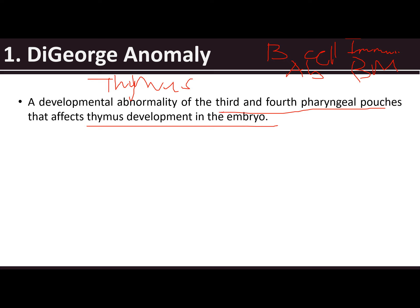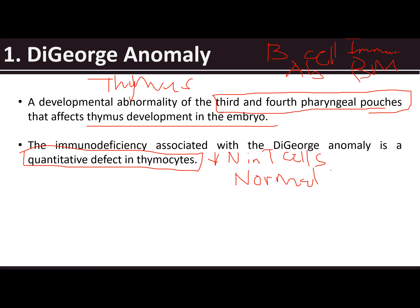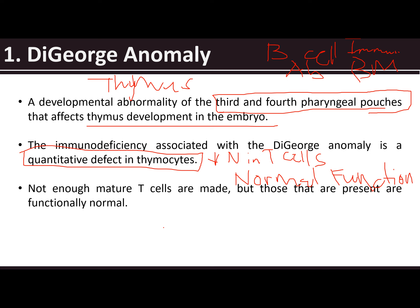In DiGeorge anomaly, the third and fourth pharyngeal pouches are affected. The immunodeficiency is a quantitative defect in thymocytes — meaning there is a decreased number of T cells, but with normal function. Not enough mature T cells are made, but those that are present are functionally normal.